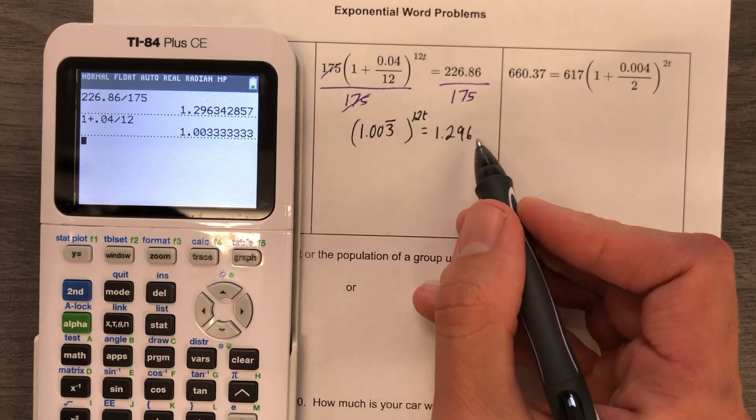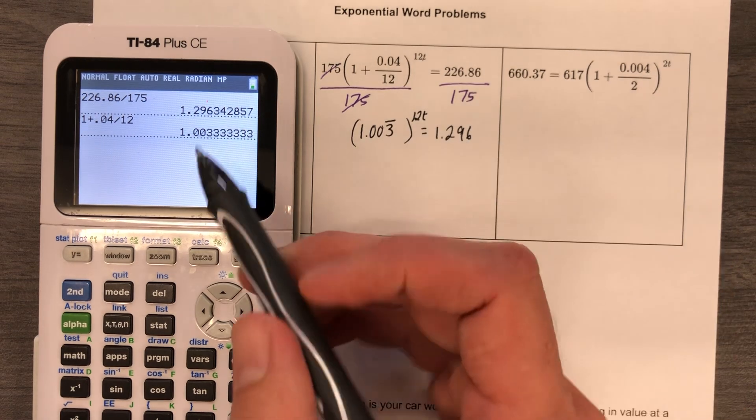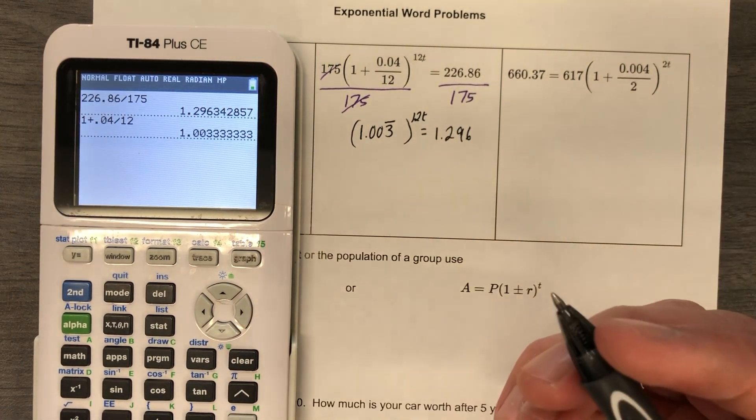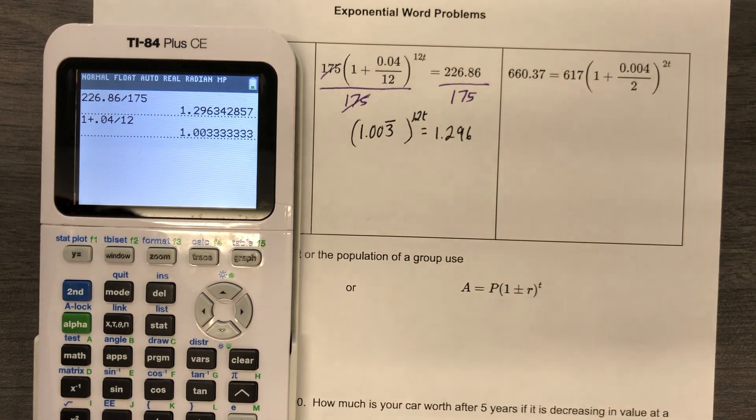Now, I said don't round it, and I rounded it. But again, when I use this in my calculator, I'm not going to use 1.296. I'm going to use the whole thing. Three, four, you know, I'm going to go through that whole spiel.